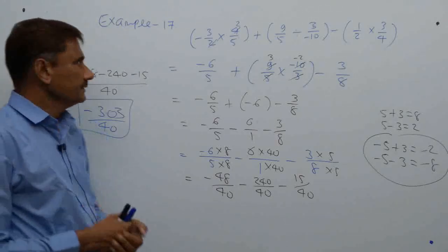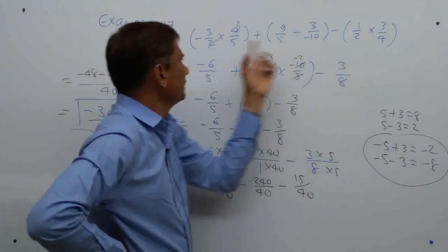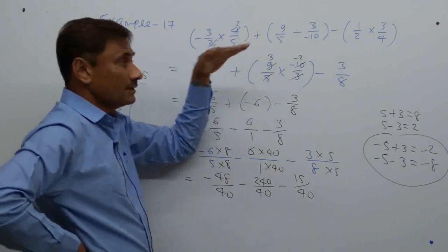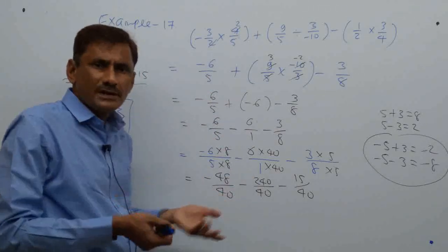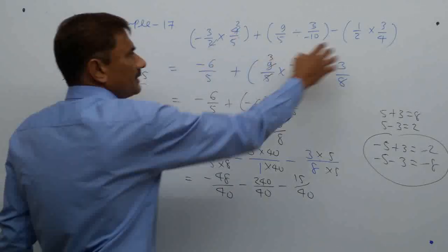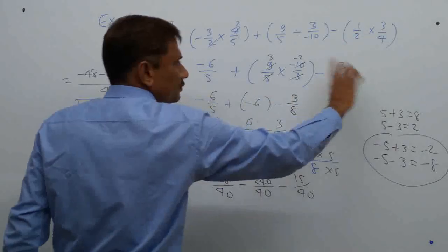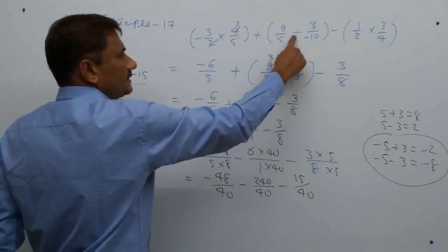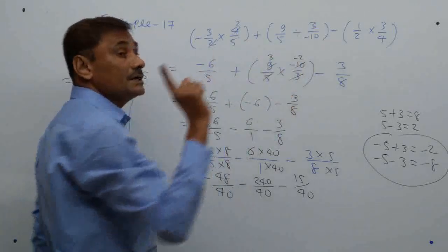To explain again: first I multiplied within the brackets and cancelled where possible. For the division, I converted the division sign into multiplication by inverting the divisor. Then I opened the brackets — plus times minus minus. Wherever in-between there are plus or minus signs with fractions, take LCM. LCM here is 40 since 5 and 8 are co-prime.